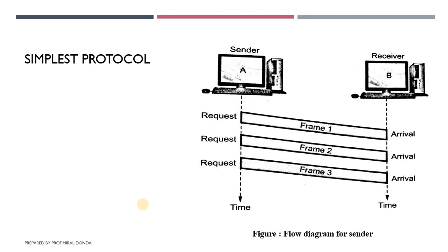The sender sends a sequence of frames without thinking about the receiver. To send three frames, three events occur at the sender side and three events at the receiver side. Data frames are shown as boxes where the height represents the transmission time to transmit the packet. Sender A keeps sending frames without minding the flow control or error control to the receiver — these three frames are sent while receiver B is still processing the first frame.